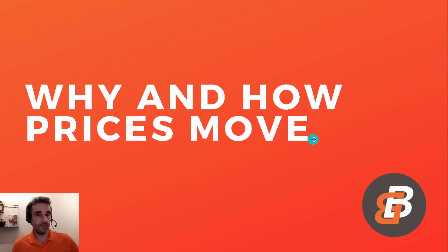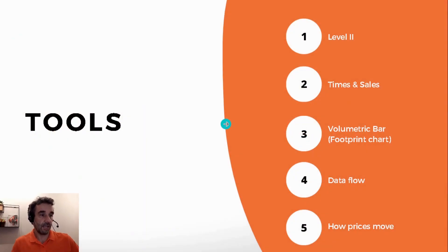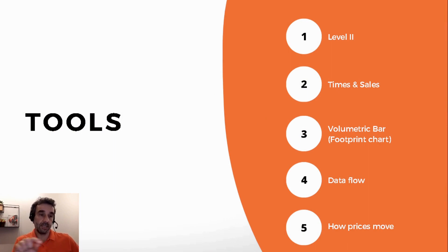We could start here from the list of tools. We have the Level 2, the Times and Sales, and volumetric bars. I'll show you how the data flows there and how prices move.